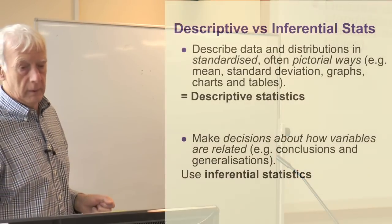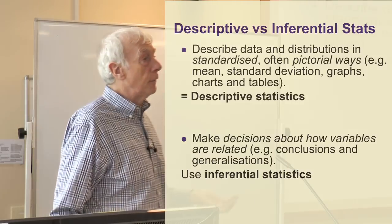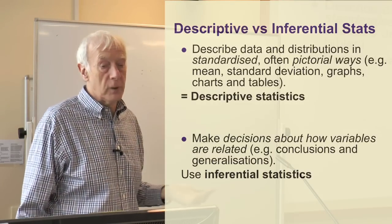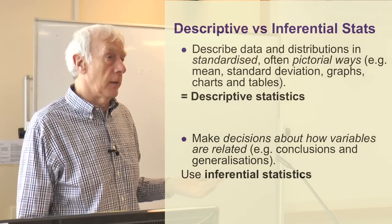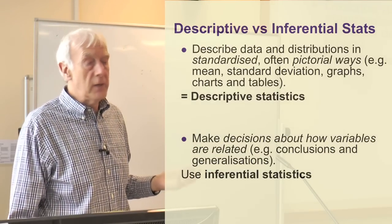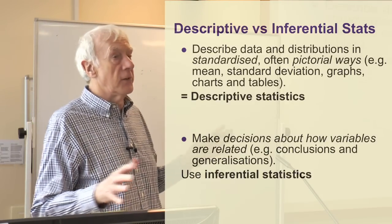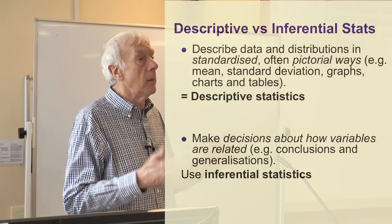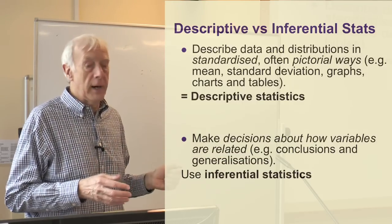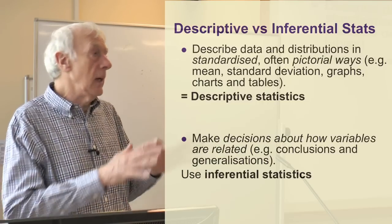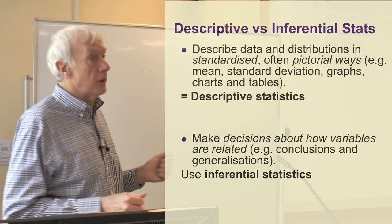Let's start with descriptive versus inferential statistics. So far, the statistics I've talked about, particularly in the session two weeks ago, are what are called descriptive statistics — things that describe the distribution. They tell you where the middle is, how well spread out it is, and so on. Things like the mean, the median, the mode, the standard deviation, and the interquartile range are all ways of describing the figures you've got. They're referred to as descriptive statistics.